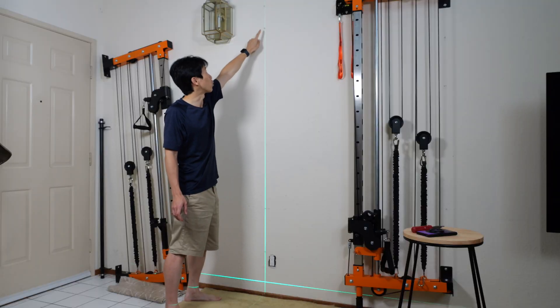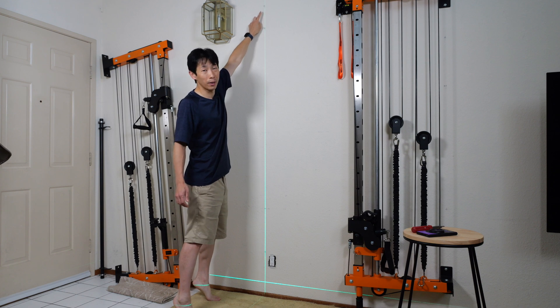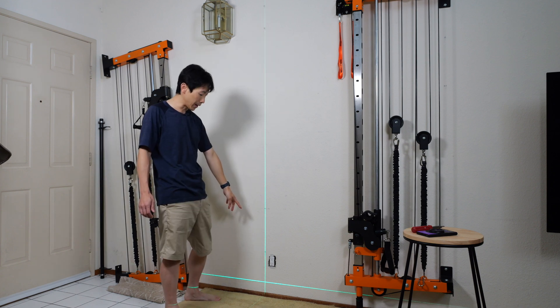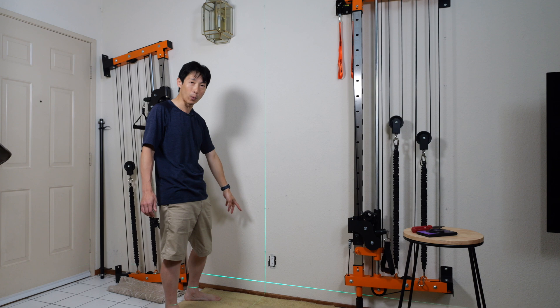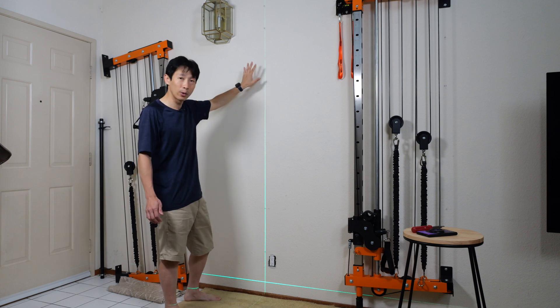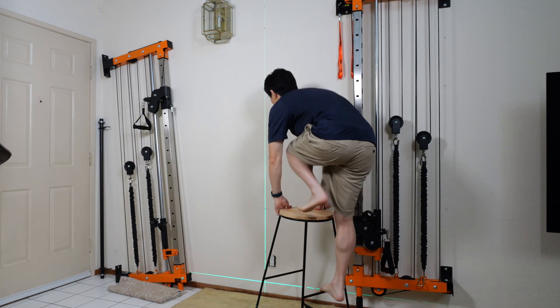Now the laser is right on top of what the Wallabot says here. One eighth of an inch to the right of the Wallabot marker. Down here, the laser is to the left of the marker, about one sixteenth of an inch. So I think I'll go with that. Come over here and mark it.